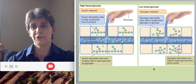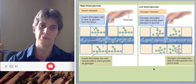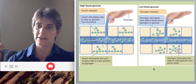Okay, so glucose too high, insulin is released and lowers it. Glucose too low, glucagon is released and raises it.